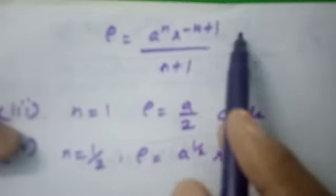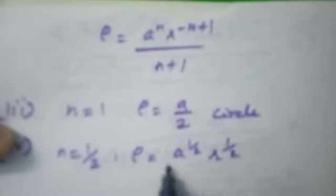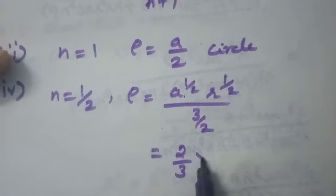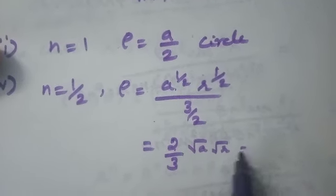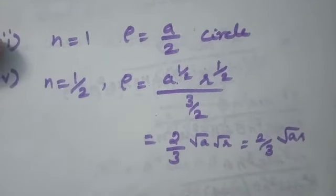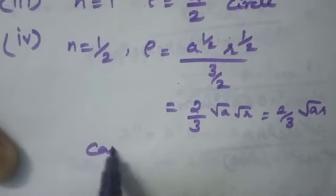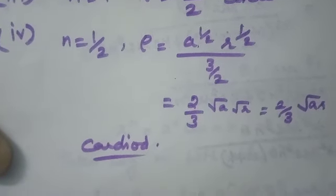If n = 1/2: ρ = a^(1/2) · r^(−1/2+1) / (1/2+1) = a^(1/2) · r^(1/2) / (3/2) = (2/3)·√(ar). This is the radius of curvature for a cardioid.